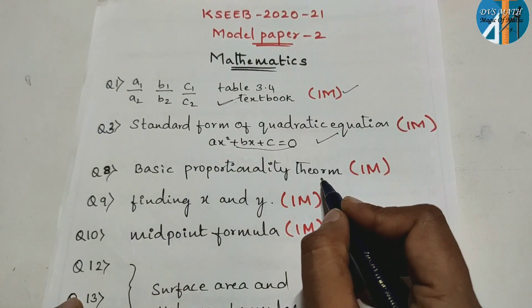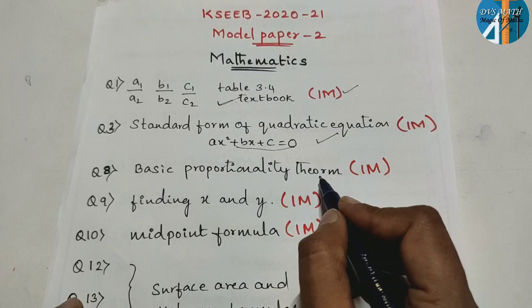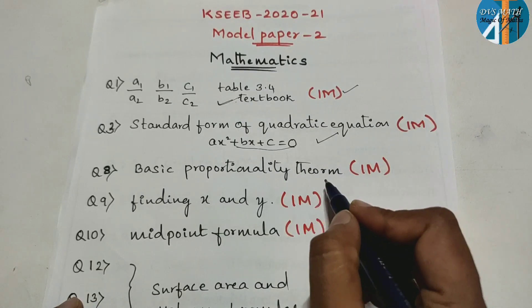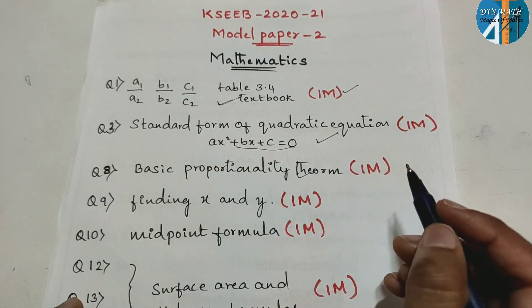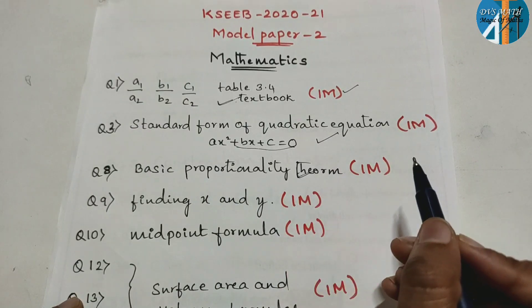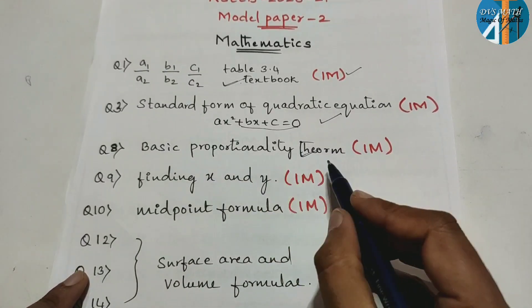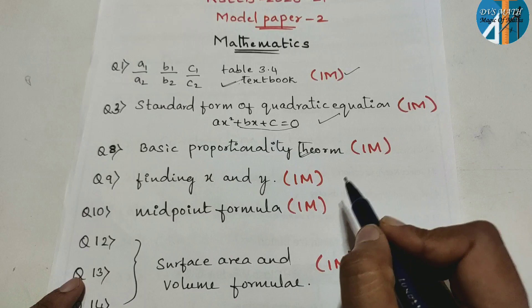Next one, the theorem statement is made in model paper 1. Basic proportionality theorem statement is made in the theorem related problem. The sides are equal to 0. Next one mark is finding x or y.